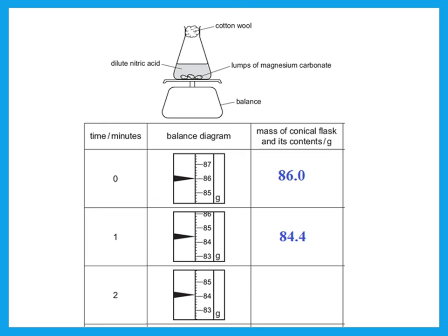Notice whether each division is 0.2 or 0.1 and so on. So the reading at one minute is 84.4, not 0.2. The last one is 84.1 because it is in between 84 and the first graduation, and each of those graduations is 0.2.